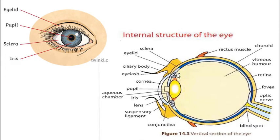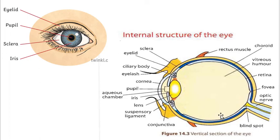We have the ciliary body here, which holds the ligaments that hold the lens. The whitish part is known as the sclera. We also have the sclera, and covering it of course is the cornea. Going inside, another component that you would be very interested in is the conjunctiva. You have the conjunctiva right there. We also have muscles that hold the eyeball in place.